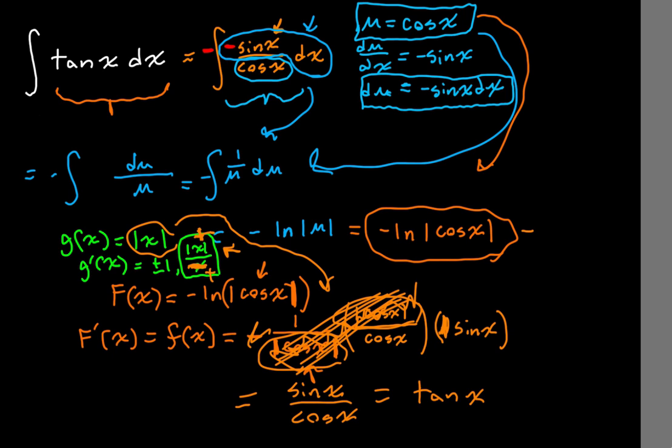What did I forget? The plus C. Never forget the plus C. Plus C is there. I hope it's clear, even if maybe the absolute value parts were tricky, how this odd-looking function — negative natural log of the absolute value of cosine of x — is the antiderivative of the more familiar function, tangent of x. Thanks for watching.